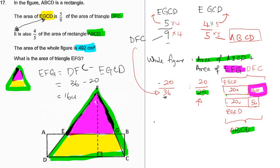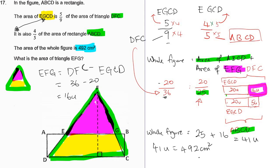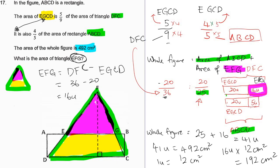Now I have everything in units. My whole figure is ABCD plus EFG. ABCD is 20 plus 5, which is 25 units, plus EFG at 16 units — I will have a total of 41 units. My total of 41 units gives me an area of 492 cm². So one unit gives me 12 cm². I want to know the area of EFG. EFG is 16 units times 12 cm², which gives me 192 cm². That is the area of EFG.